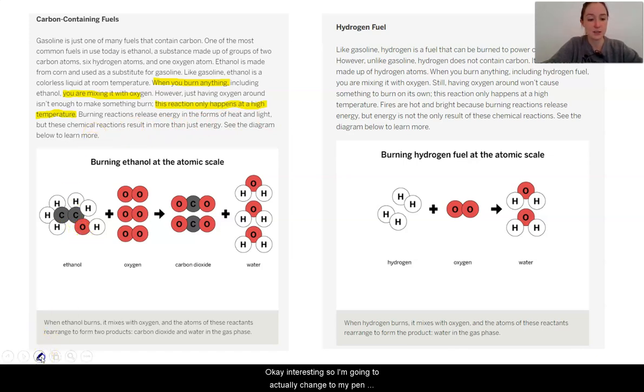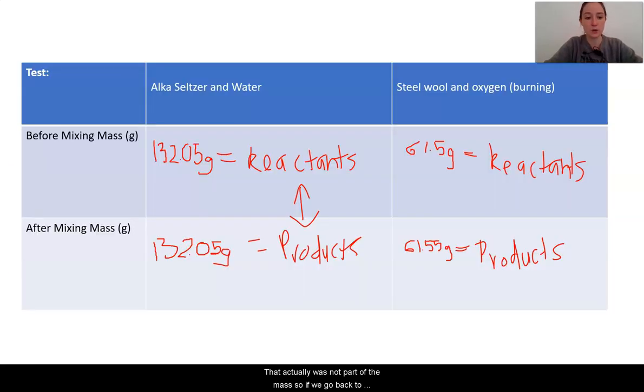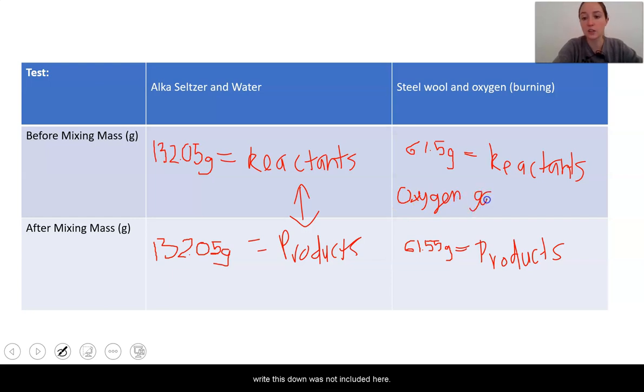Okay, interesting. So I'm going to actually change to my pen here. So here is my ethanol. That is the fuel in this case. And that, for example, would be kind of one of our reactants, just like the steel wool, the thing that is actually burning. Now in the text, we realized that what is occurring here is that we are causing a reaction with oxygen gas. And because it's a gas, that means that when we were measuring our reactants, that actually was not part of the mass.